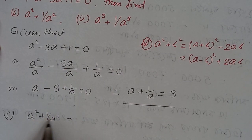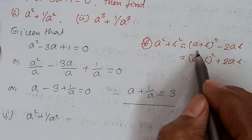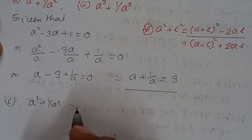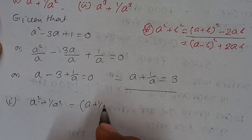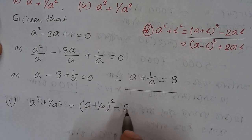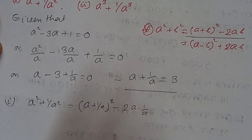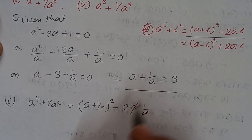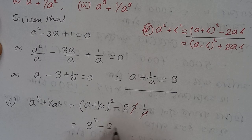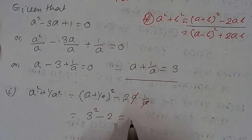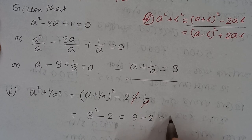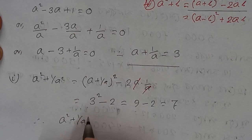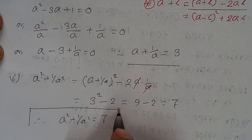So, a square plus 1 by a square equals a plus 1 by a whole square minus 2 times a into 1 by a. Since a plus 1 by a equals 3, this gives 3 square minus 2, which is 9 minus 2 equals 7. Hence, a square plus 1 by a square equals 7.